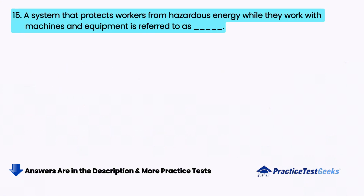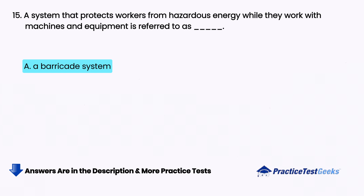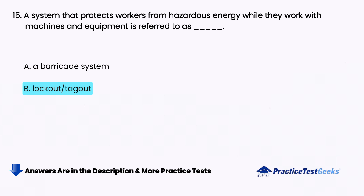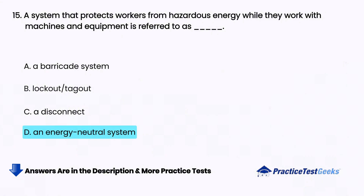A system that protects workers from hazardous energy while they work with machines and equipment is referred to as blank. A. A barricade system, B. Lockout or tagout, C. A disconnect, D. An energy-neutral system.